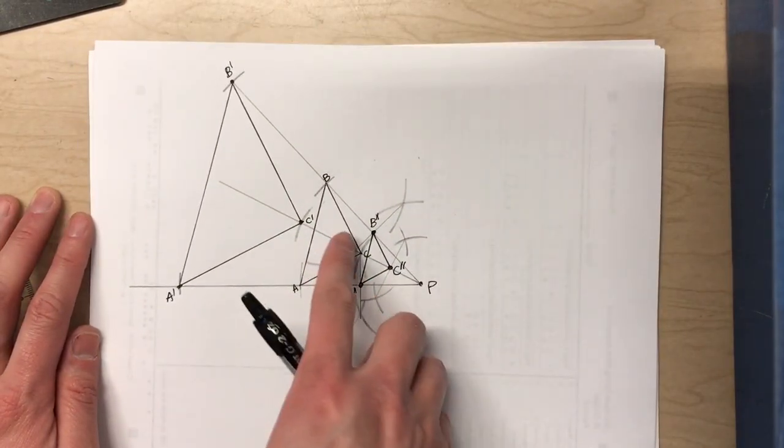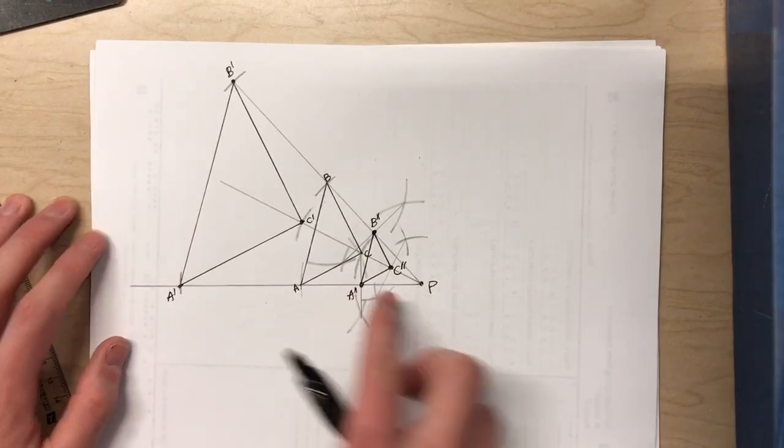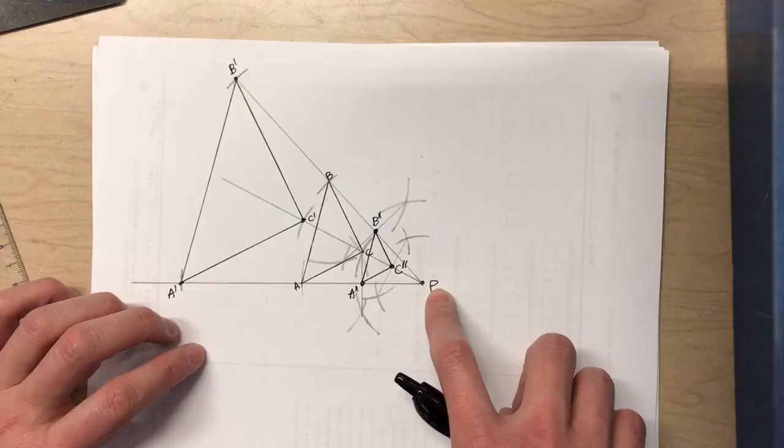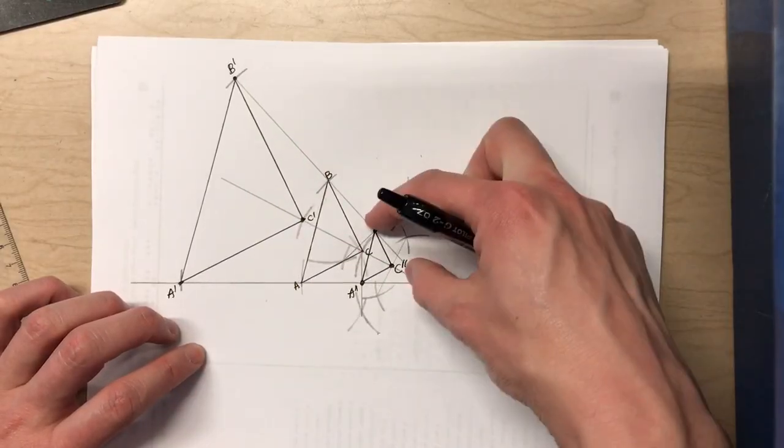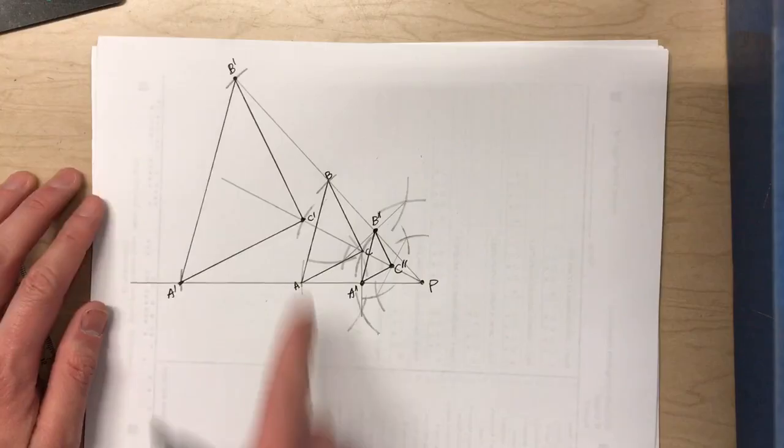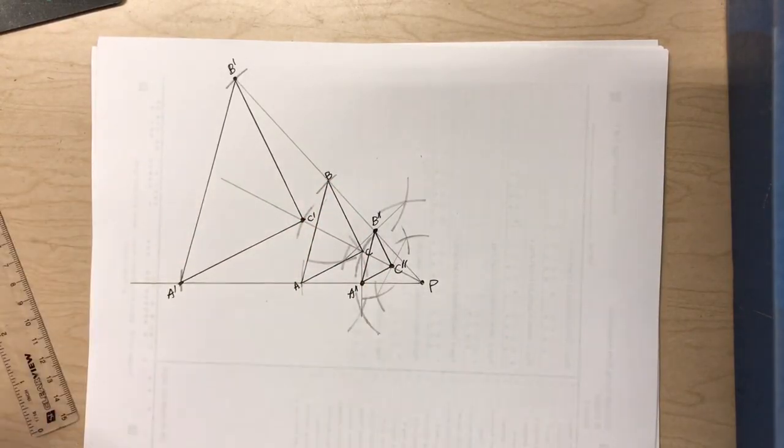So notice the scale factor of one half shrinks all the side lengths down to half the original length, and the distance of each point to the center of dilation has been also cut in half. So there you go. Original figure. Scale factor of two. Scale factor of one half.